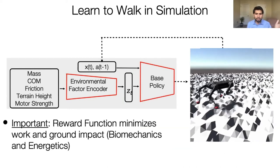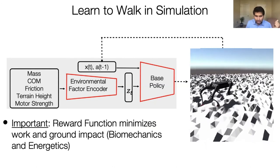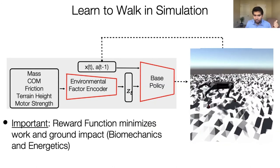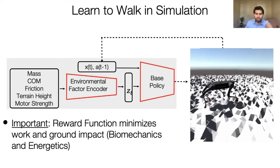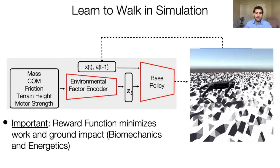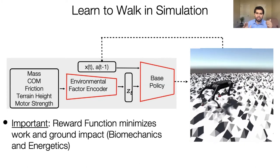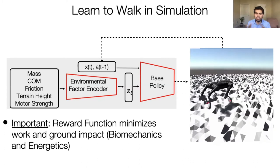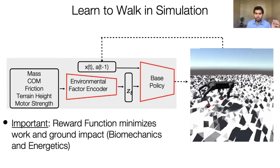We train this with reinforcement learning using a simple reward function. The terrain looks rough — we change its height and width. That's it. No stairs, nothing else.